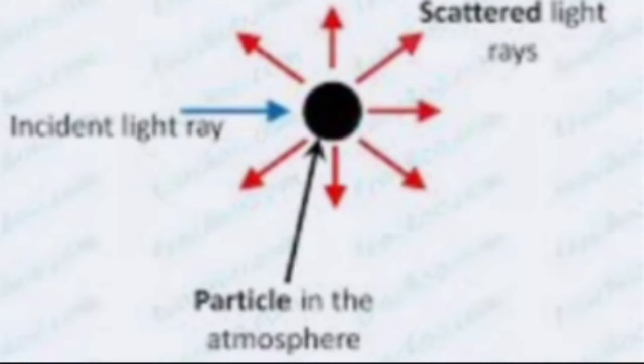Now, what is actually scattering of light? A ray of light - see the blue ray of light, incident light - it hits a particle. Now, our light gets scattered in all directions. That is called scattering of light.